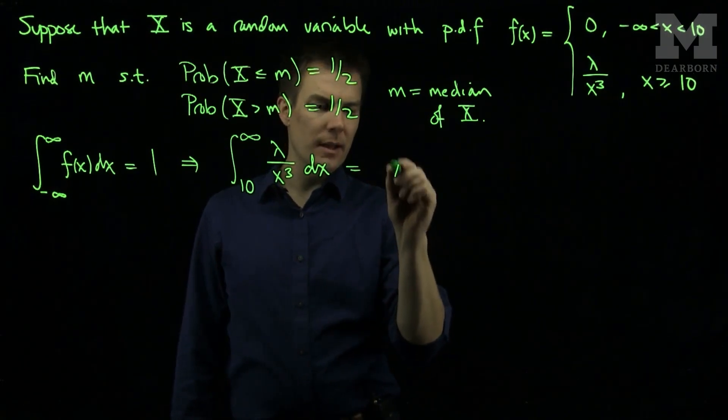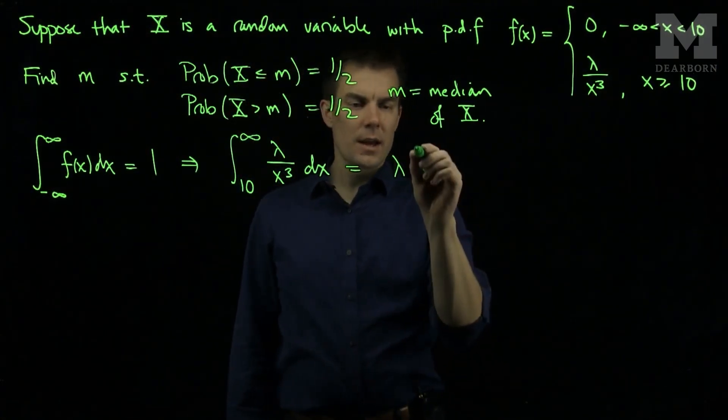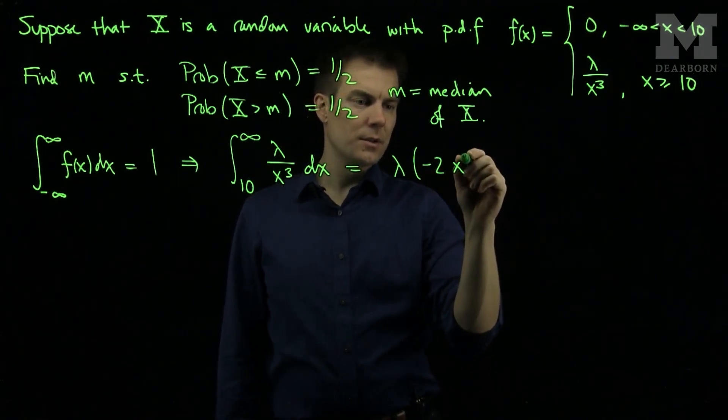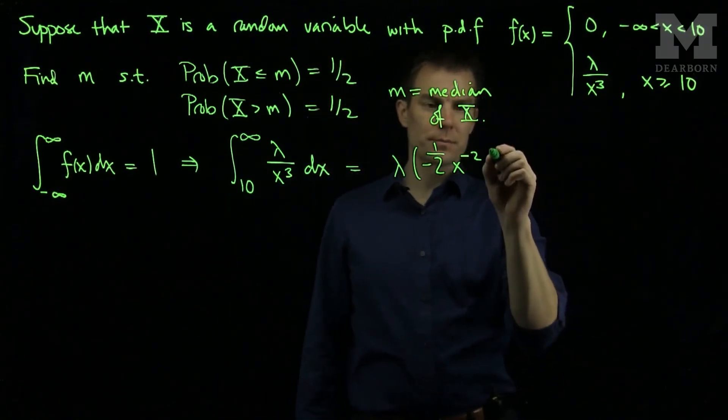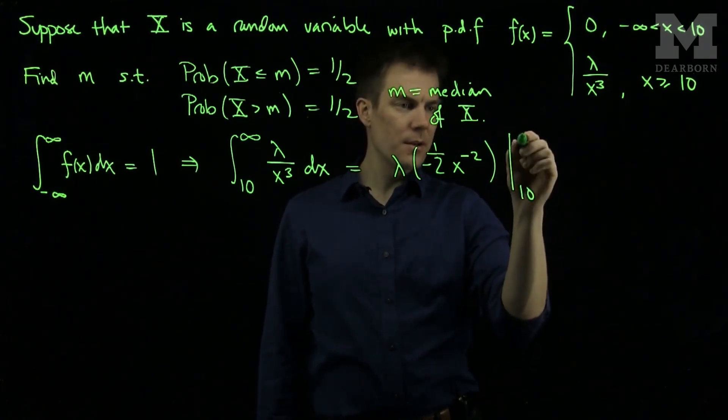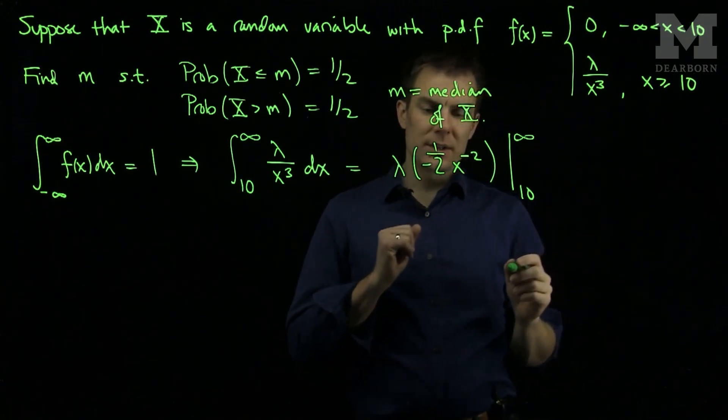And so this integral will be lambda, and an anti-derivative of x to negative 3 is negative 2 x to the negative 2 power, and this is in the denominator so we put a 1 over negative 2. We will evaluate this from 10 up to infinity and it is clear that when we plug in infinity we are going to get 0.